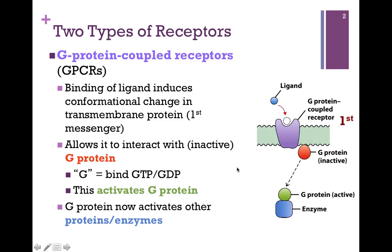That's illustrated here on the right. Our ligand in blue binds to this G-protein-coupled receptor in purple, and that's going to start this whole process. As the ligand binds to the receptor and the conformation of that receptor changes, it's now able to interact with an adjacent G-protein, which is also at the membrane. The G-protein name comes from the fact that it binds guanine nucleotides, either GDP or GTP. The ligand-bound receptor, now conformationally altered, interacts with the G-protein and converts it from inactive to active.